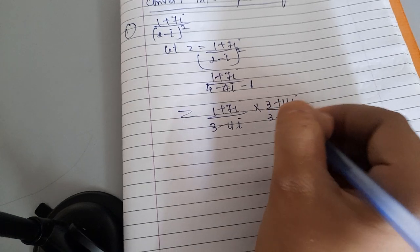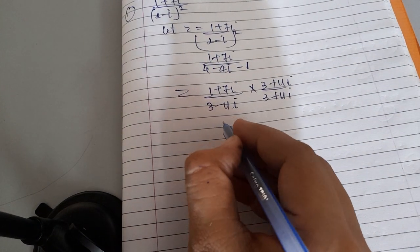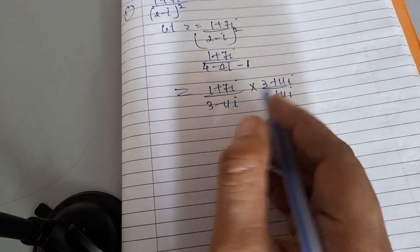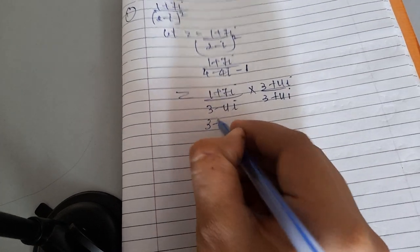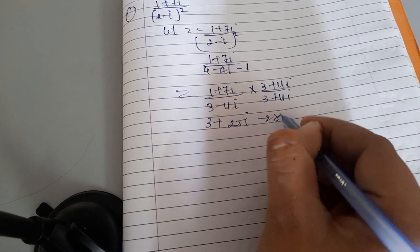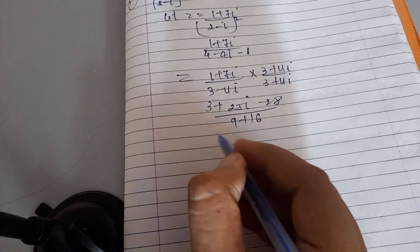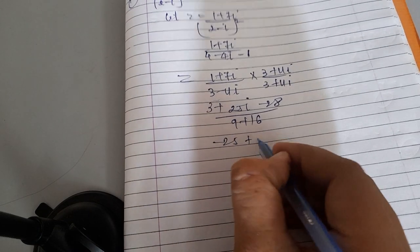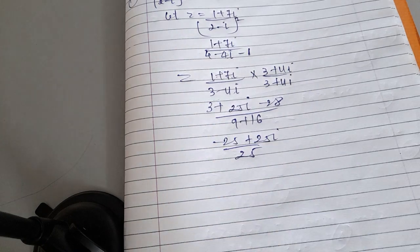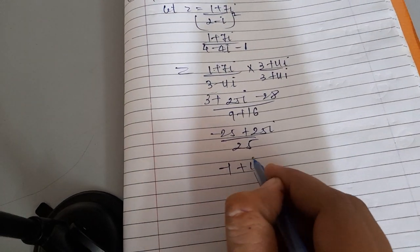Multiply numerator and denominator by the conjugate (3 + 4i). The numerator becomes (1 + 7i)(3 + 4i) = 3 + 4i + 21i + 28i² = 3 + 25i - 28 = -25 + 25i. The denominator is 9 + 16 = 25. So z = (-25 + 25i)/25 = -1 + i.